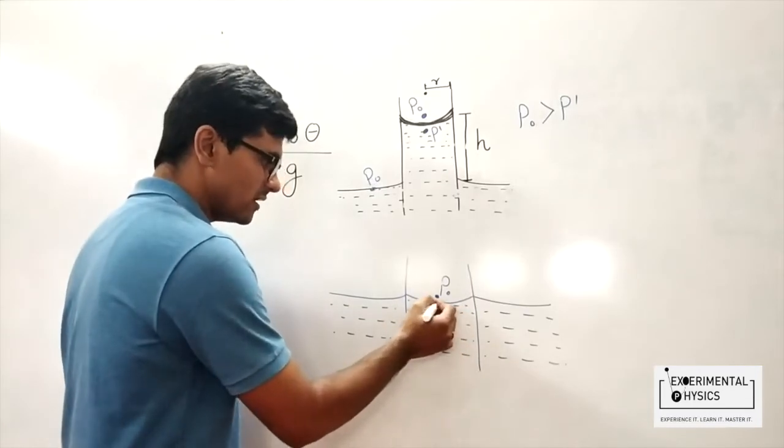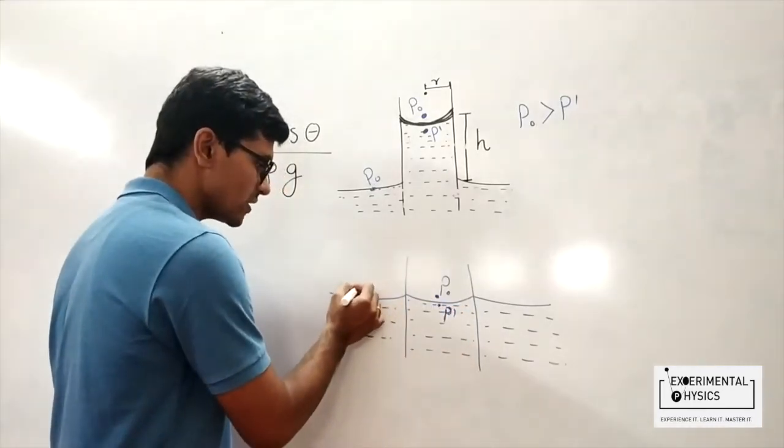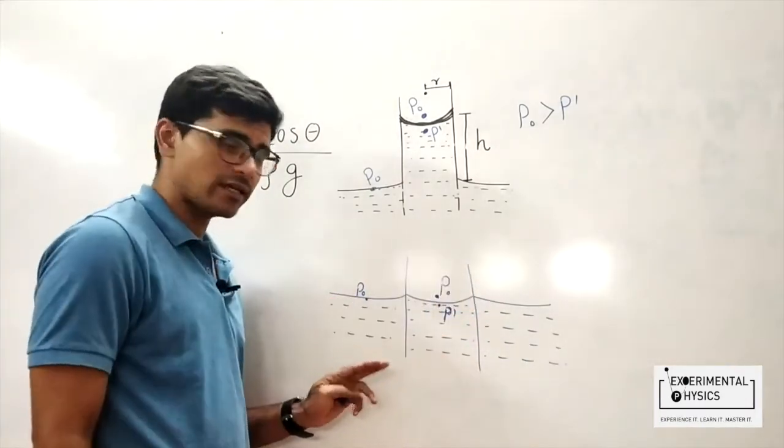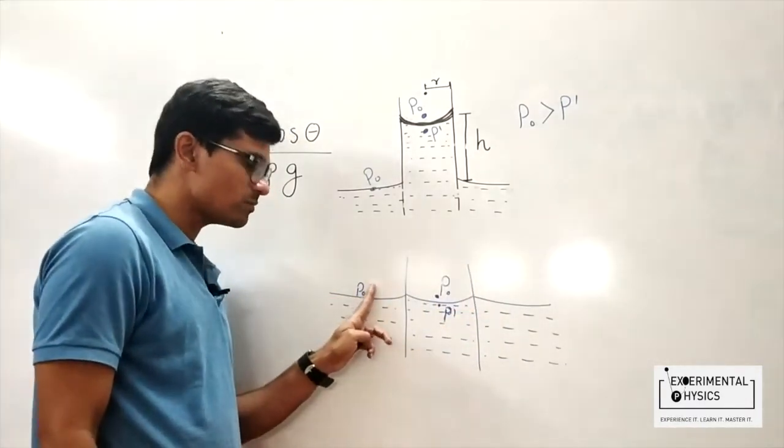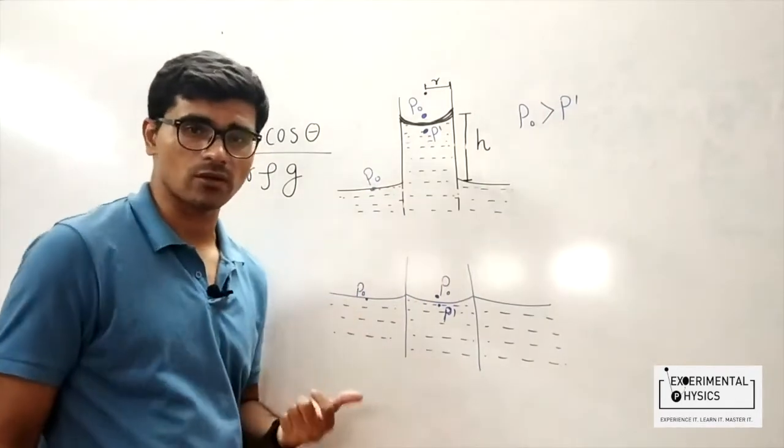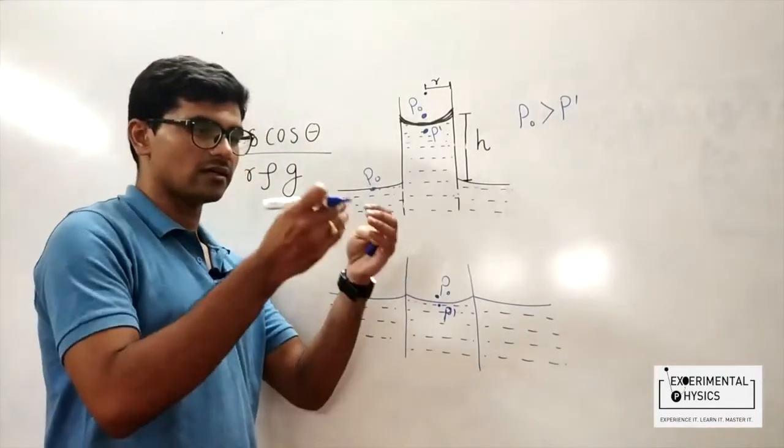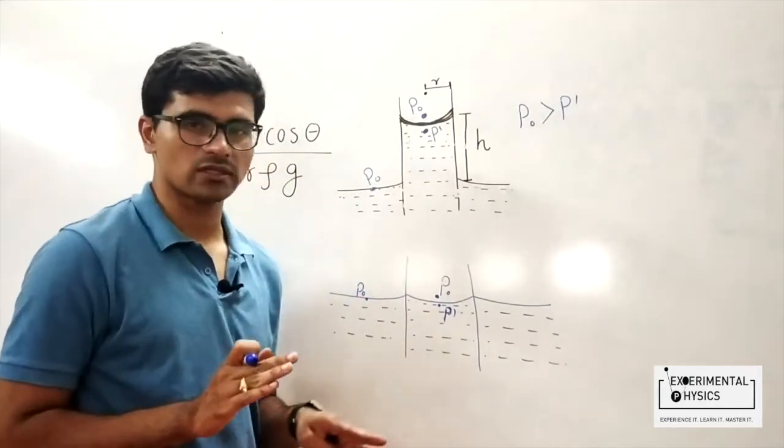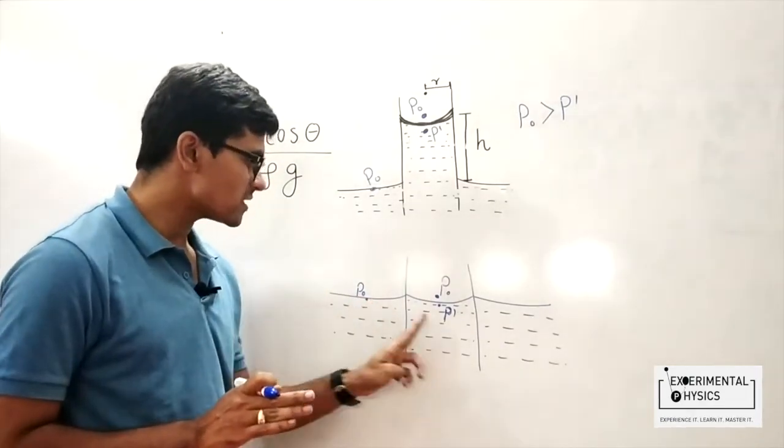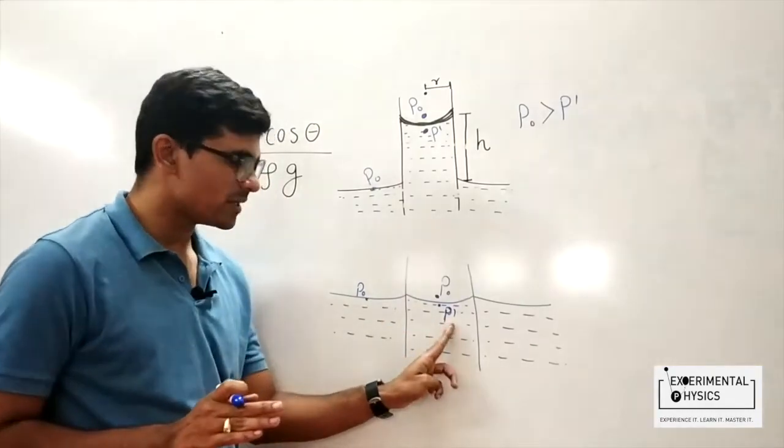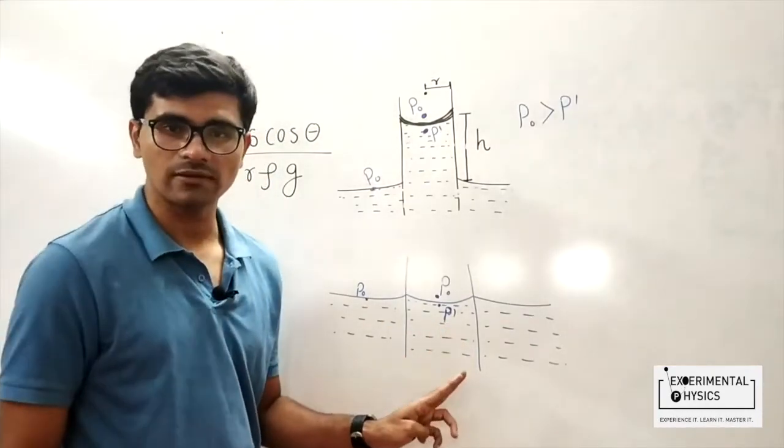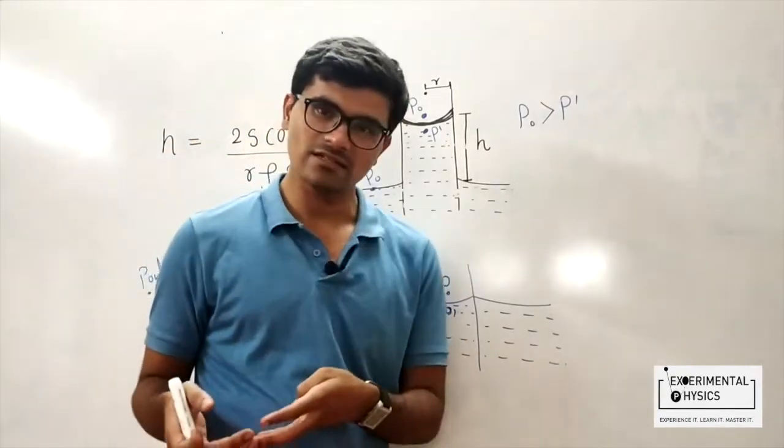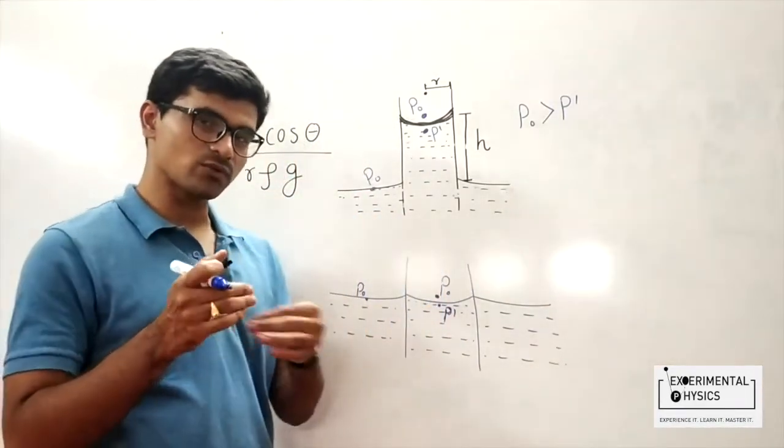But we know that p' level is the same as this horizontal level. They are at the same horizontal level, right? So p' must be equal to p₀ from the hydrostatic pressure law, that the pressure in a calm water or any liquid is the same at any horizontal level. So p₀ and p' must be equal. But that cannot happen because we know that due to the curvature change, the pressure is different on the two sides of the curvature. p' must be less than p₀.